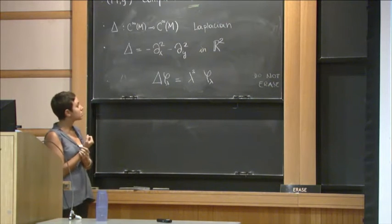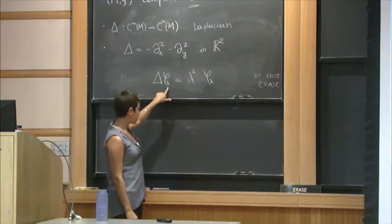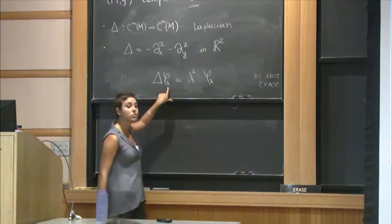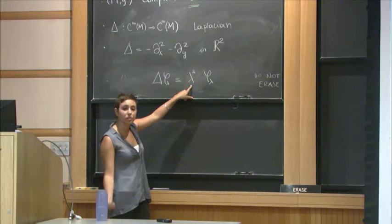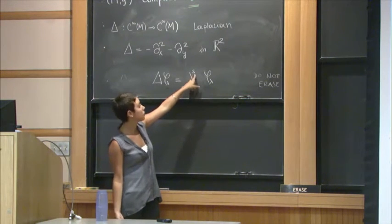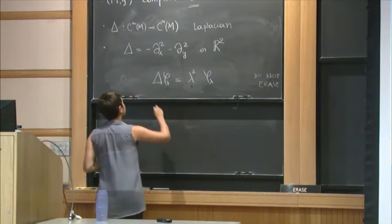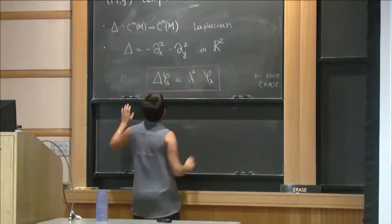Since the manifold is compact, its spectrum is going to be discrete. I'm going to be writing phi lambda for the eigenfunctions and lambda squared for the eigenvalues. The operator is positive, so all the eigenvalues are positive. This is why I allowed the square up on top of here. And this notation will remain throughout my talk.